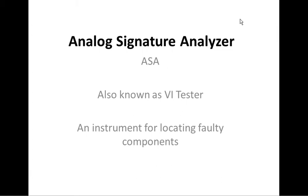Hello everybody! Today we're going to talk about the Analog Signature Analyzer, ASA for short, also known as VI Tester, an instrument for locating fault components on a circuit board. Nobody likes to read a manual, therefore we decided to just make a video presentation.